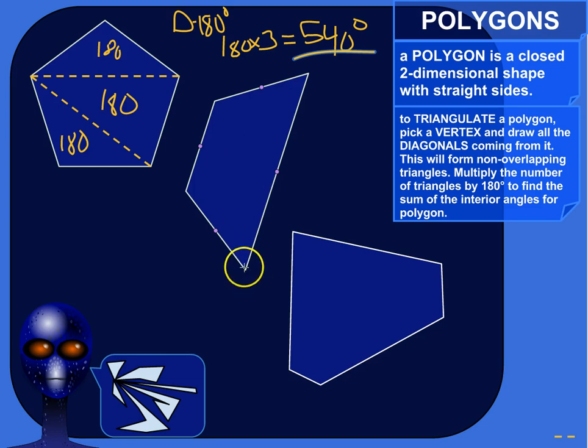So all the imaginary lines that will connect this vertex to the other vertices that are not adjacent to it. So this is adjacent and this is adjacent. The next one's over. So actually, there's only one diagonal that we can draw from this vertex.